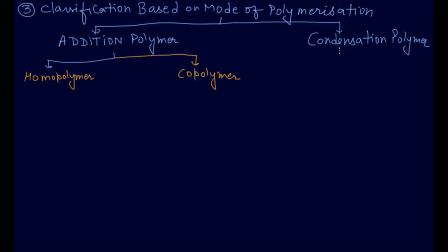This is divided into two types. And addition polymer is made up of two types, homopolymer and copolymer. Now you see the example how they are forming. In homo means whenever monomers are same.